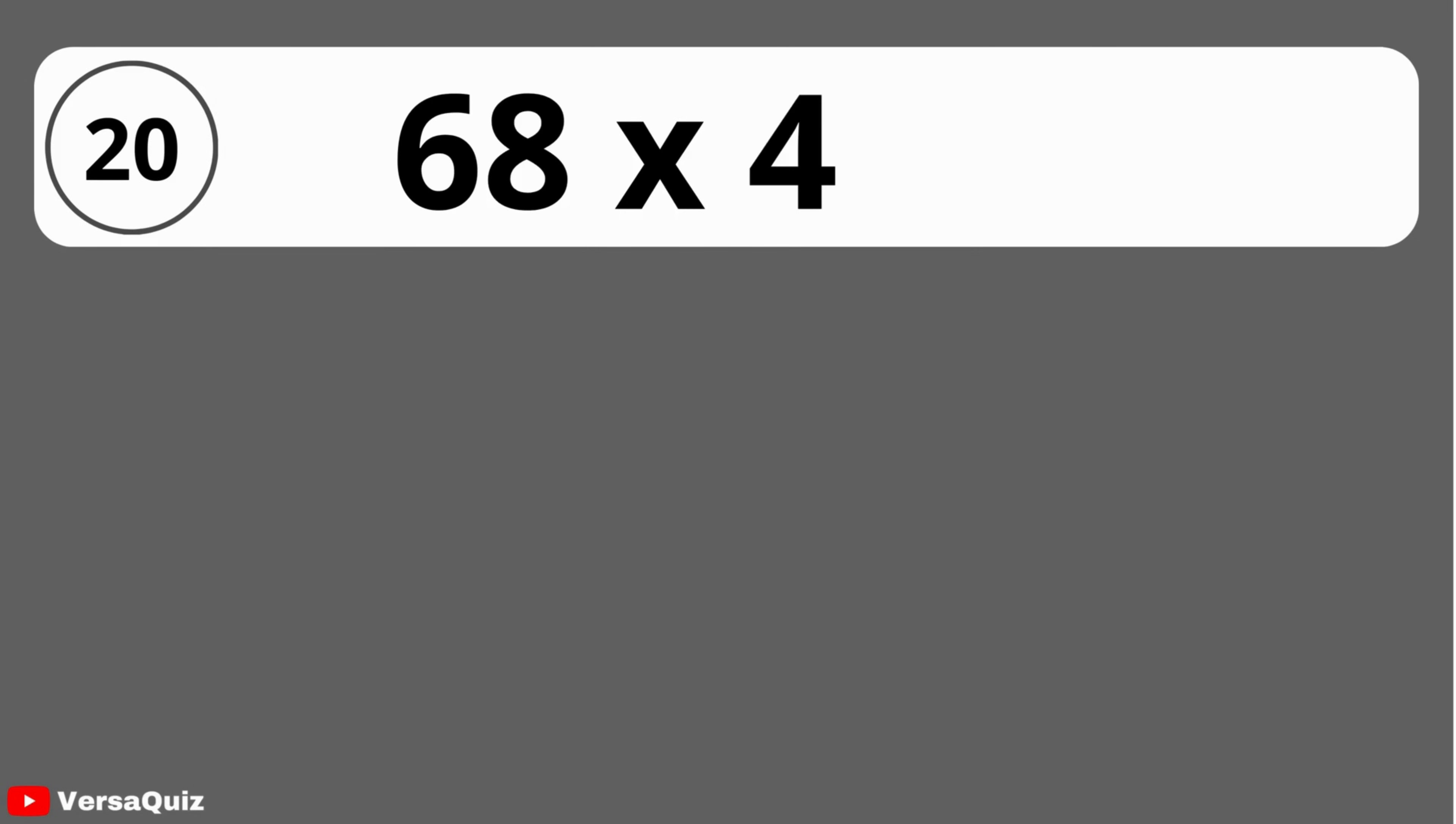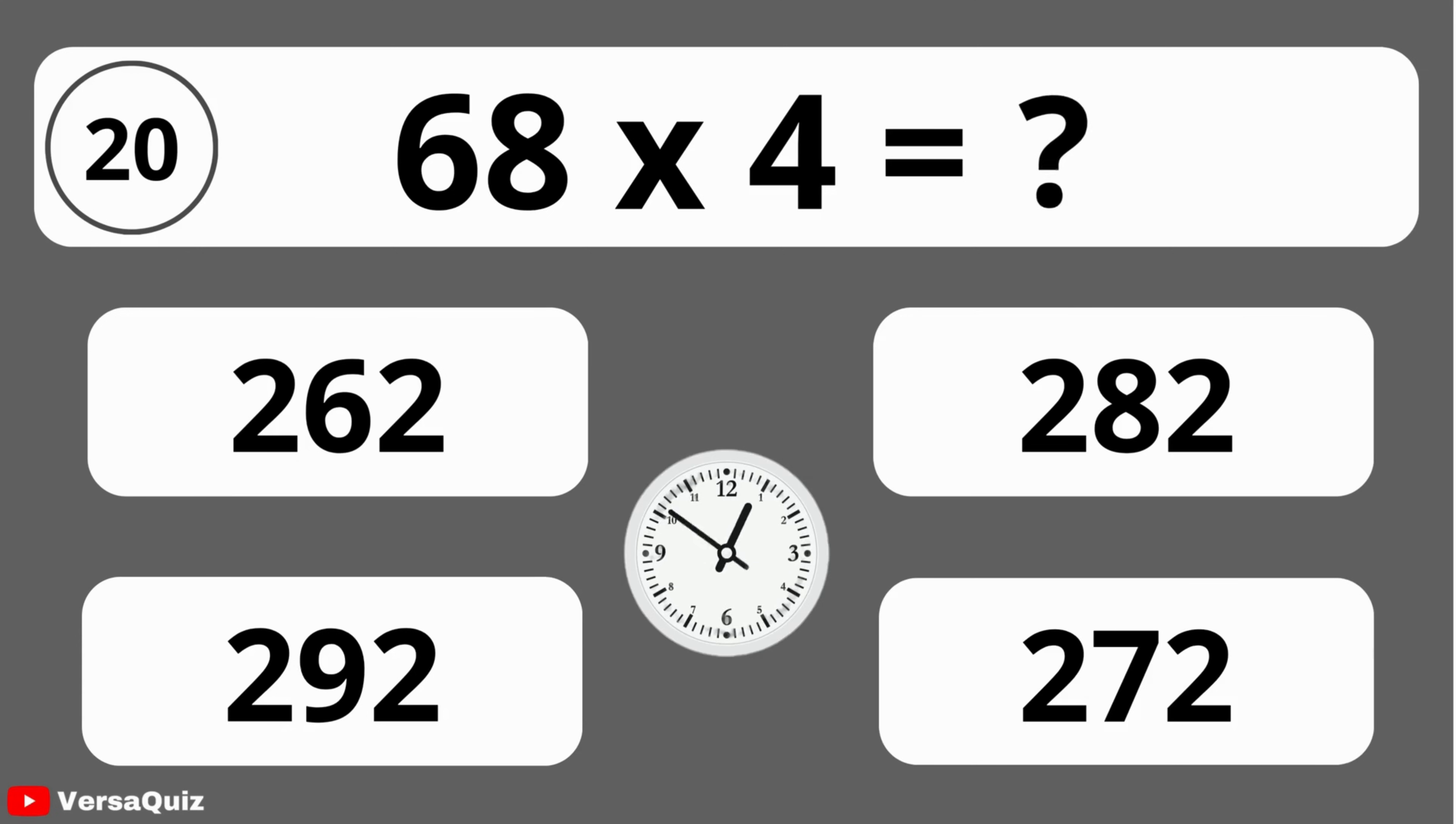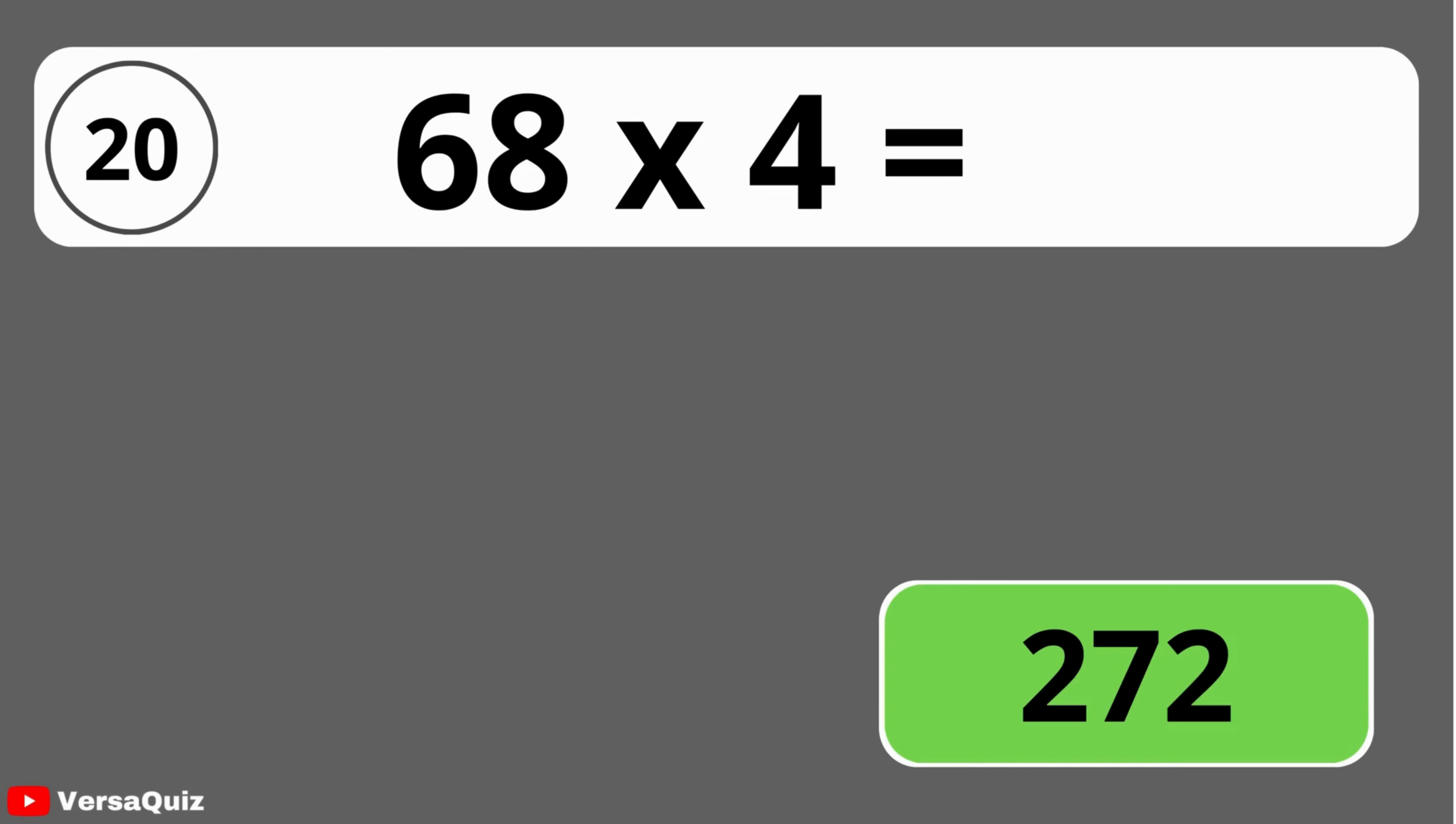What is 68 times 4? 262, 282, 292, or 272? When you multiply 68 by 4, the result is 272.